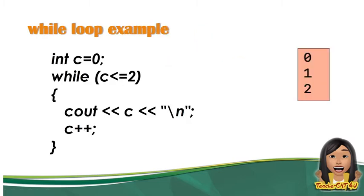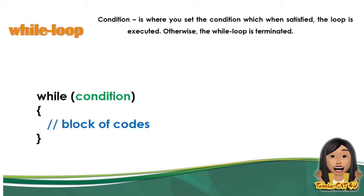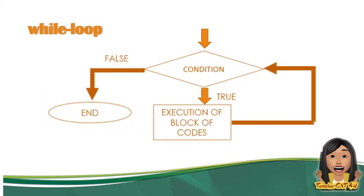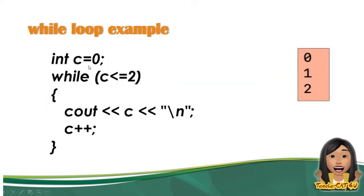Ito yung sample program ng while loop statement. Kung mapapansin ninyo, kung ikukumpara niya sa for loop — ang for loop kasi nasa iisang parenthesis lang yung initialization, condition, and the increment/decrement. Sa while loop naman, mapapansin ninyo na ang initialization nanggagaling sa taas. So, 'int C = 0', while C is less than or equal to 2. Then, yung increment/decrement niya nasa loob ng body ng while natin.